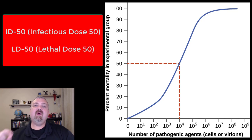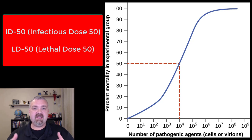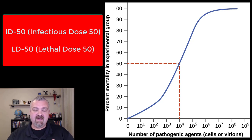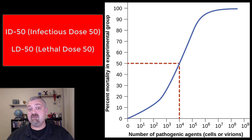Hey everybody, Dr. O. In this video, I want to talk about ID50 and LD50. So ID50 is the infectious dose 50, which is the dose — the number of organisms that it would take to cause an infection in 50% of people. So it's a good measure of how virulent a microbe is, how easily it can cause infection.